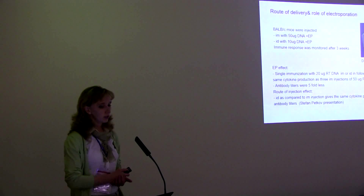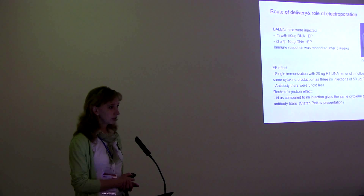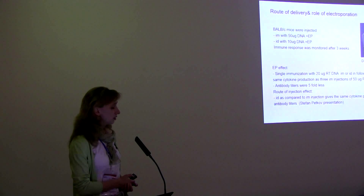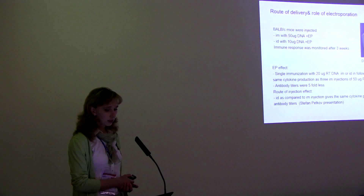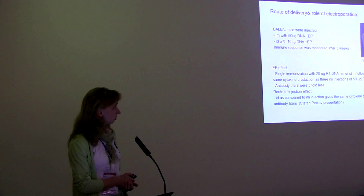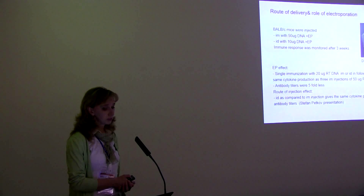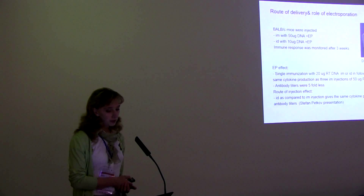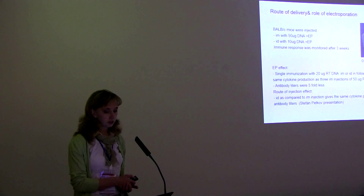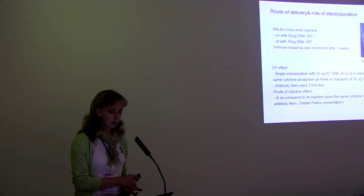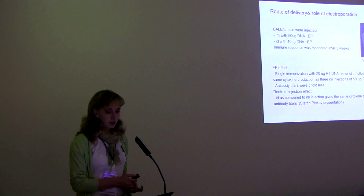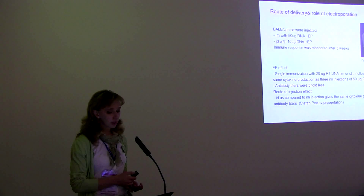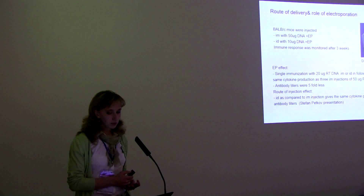We then moved on to optimize the route of delivery of our DNA immunogen and the role of electroporation. We tested our DNA immunogen in mice, injecting either intramuscularly or intradermally, with all injections followed by electroporation. We did only one injection and monitored the immune response three weeks after immunization. We found that a single immunization with 20 micrograms of DNA, either intramuscular or intradermal, followed by electroporation, was able to induce the same cytokine production as three intramuscular injections of RT-DNA.